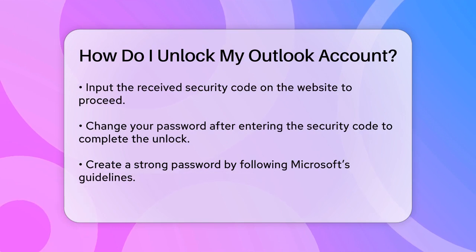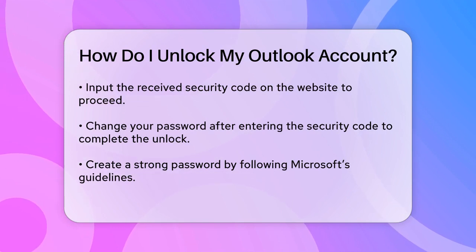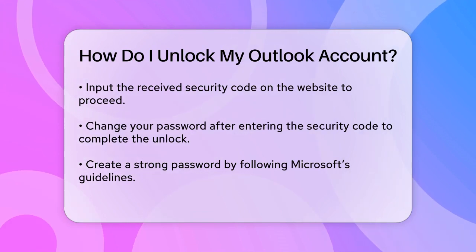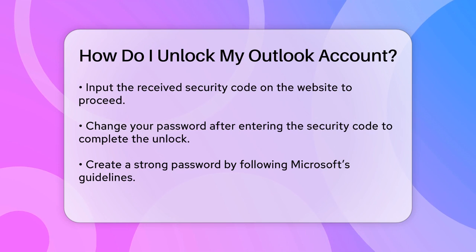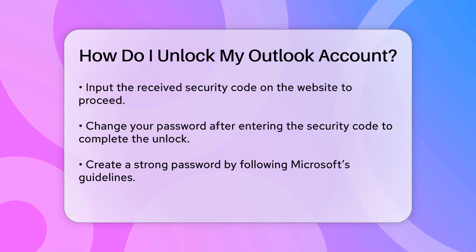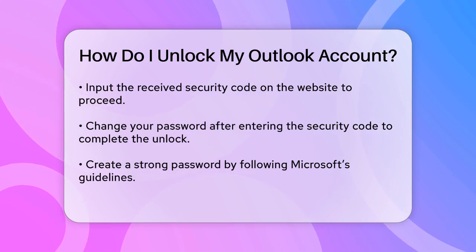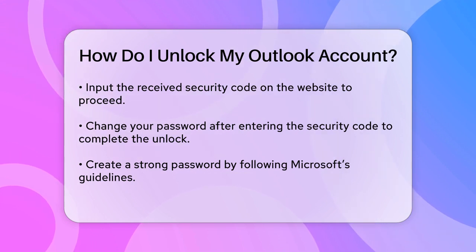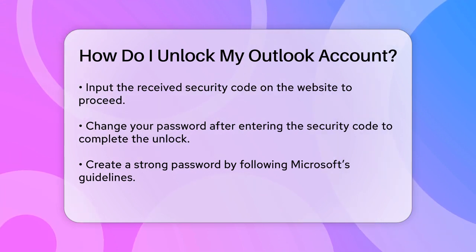If the text message method isn't working, you might need to try a different verification method. You can use an authenticator app, or select 'Use a different verification option' to get a code sent to your recovery email or another verification method you have set up.